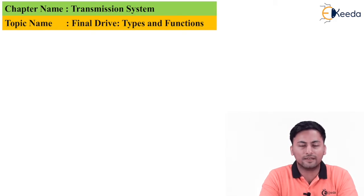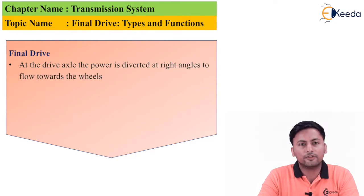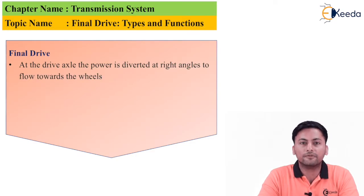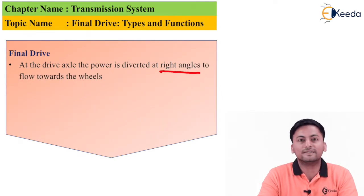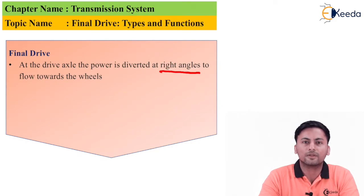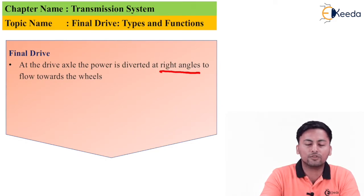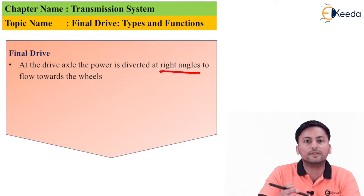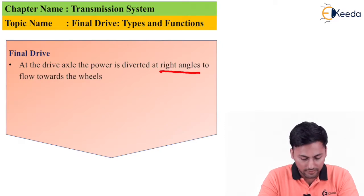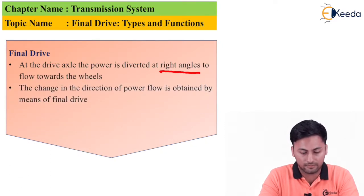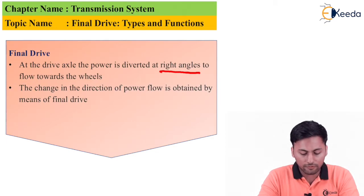Let's understand some important points. The first important point is that at the drive axle, the power is diverted at right angles — this is very important. We are trying to change the direction of power not in the straight direction, but at a right angle. This is a very important function of our final drive. The change in direction of power flow is obtained by means of the final drive.